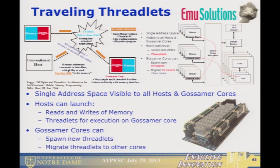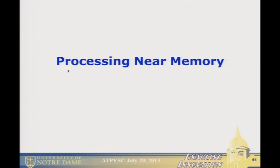There's a follow-on concept involving traveling threads: if at the bottom of each memory bank you have a very simple core — we call it a gossamer core — a memory reference is actually the state of a very small thread that literally moves through memory as needed, neither knowing nor caring where it is. We've actually built a machine; this is one of the prototype cards that does this.